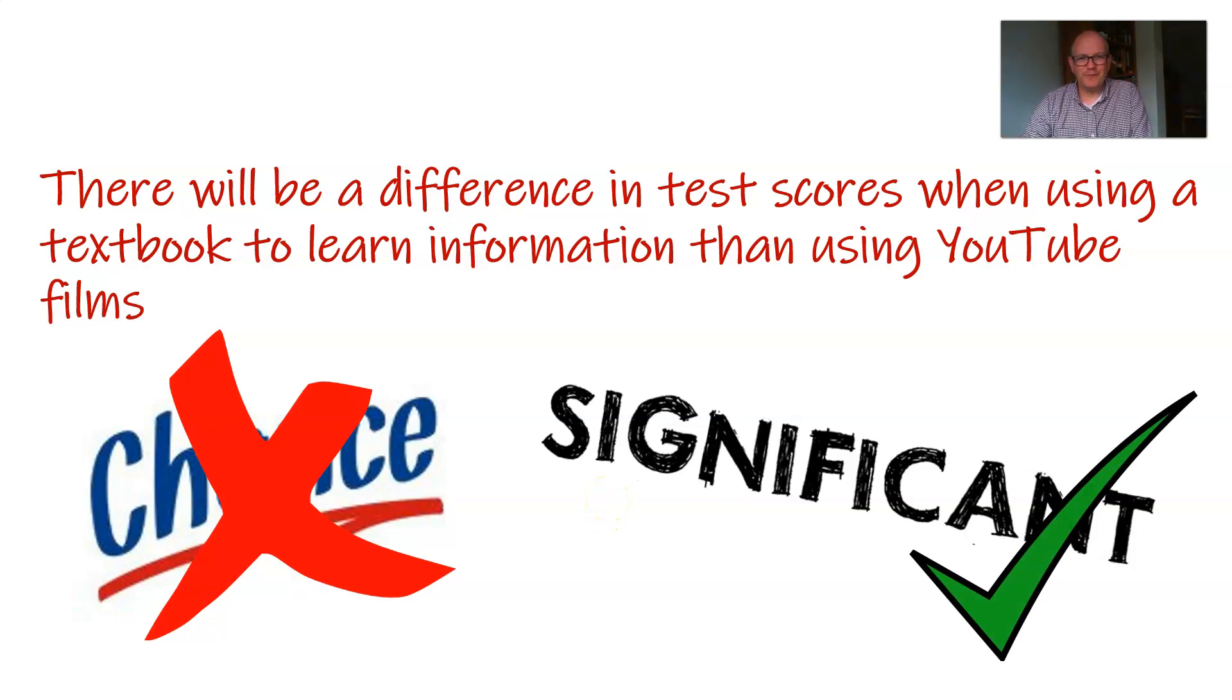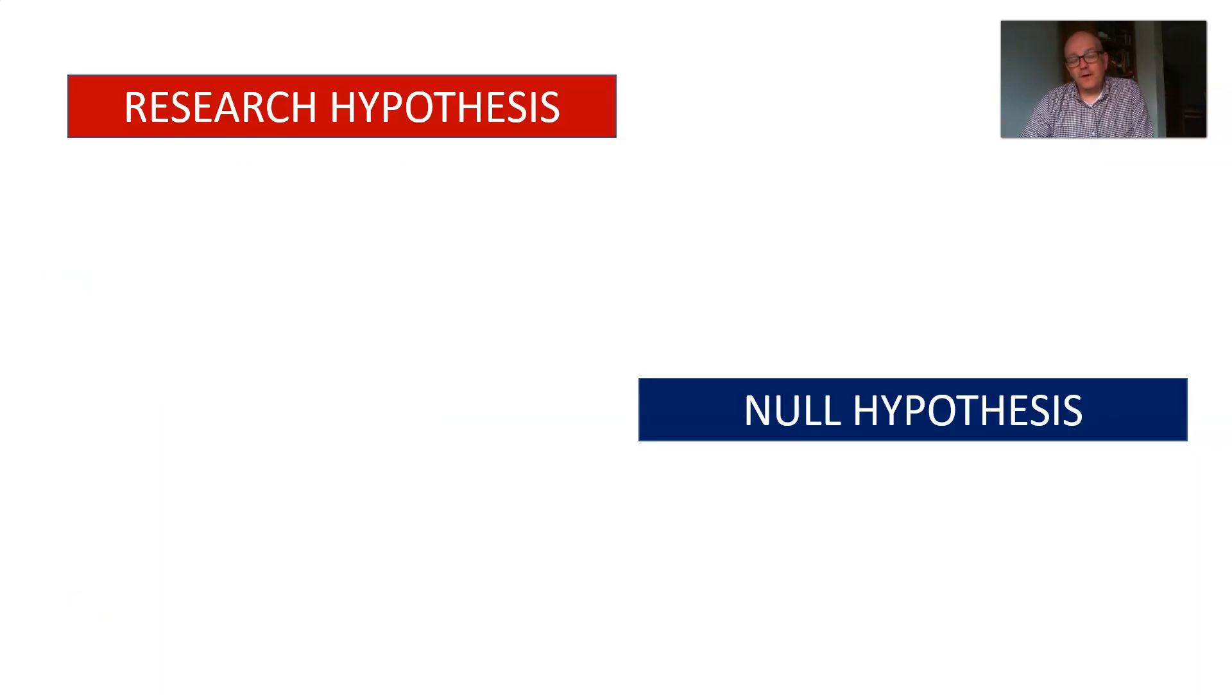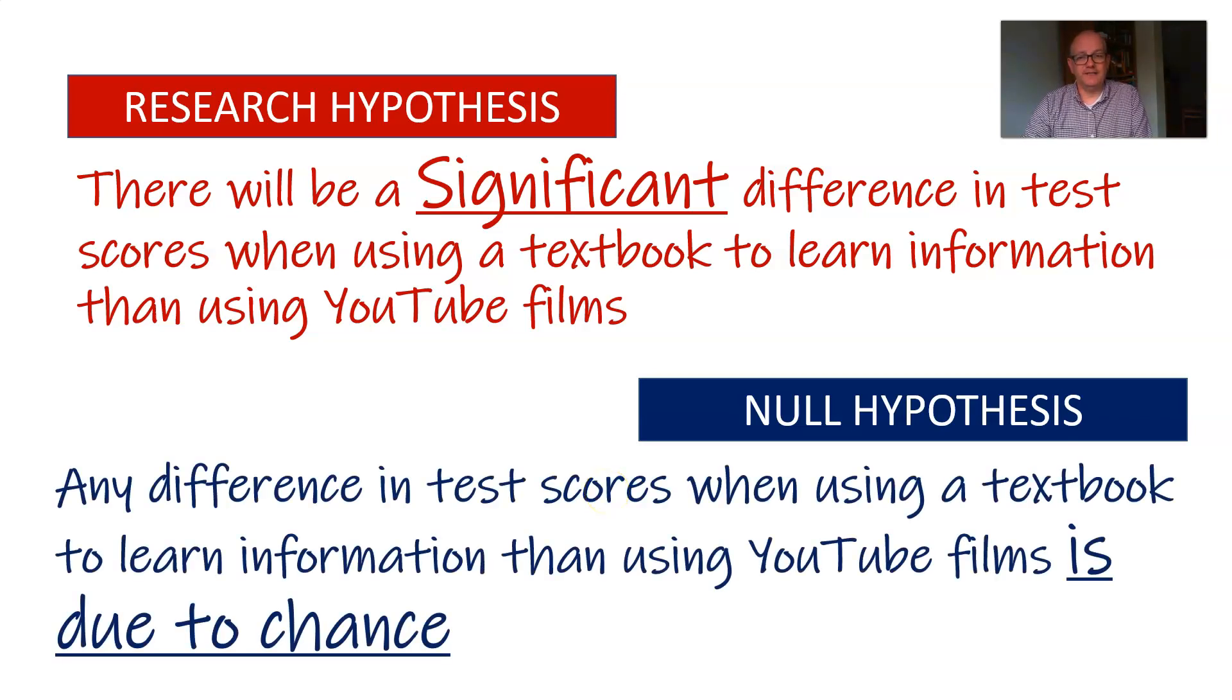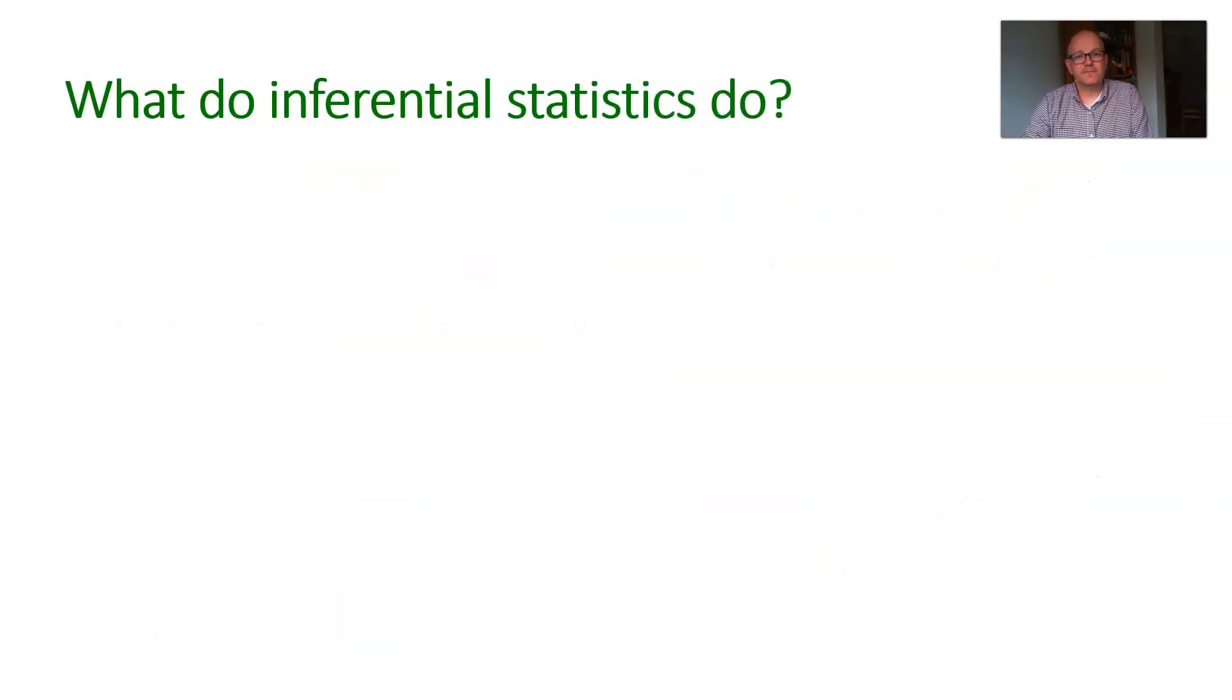I like that word significant. It means lots. It means you can really trust it. It means that something's going on. So I'm going to change my hypothesis now. My hypothesis now is that there will be a significant difference in the test scores when using a textbook to learn information compared to using YouTube films. And now I have a null hypothesis, which says that any difference in the test scores between the textbook and the YouTube films is due to chance. So I always know there will be a difference. It's whether my difference is significant or whether it's just due to chance.